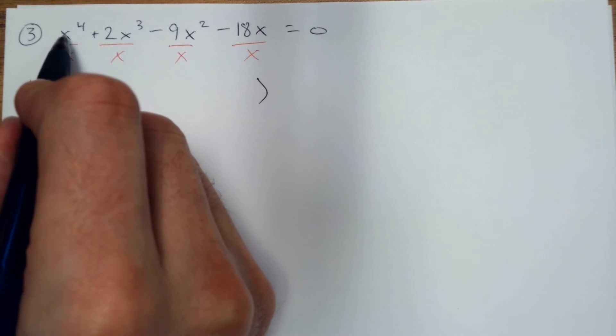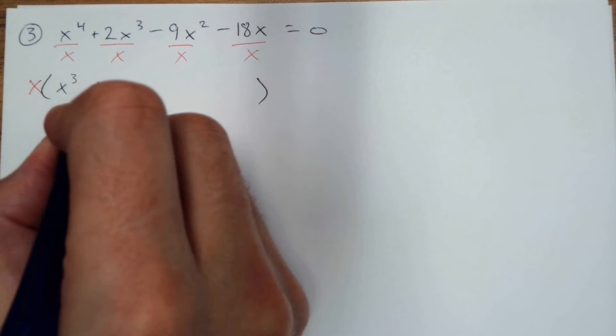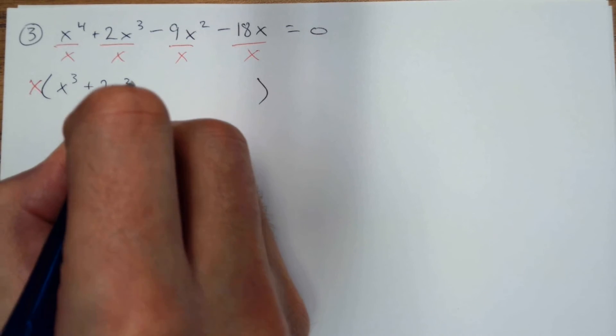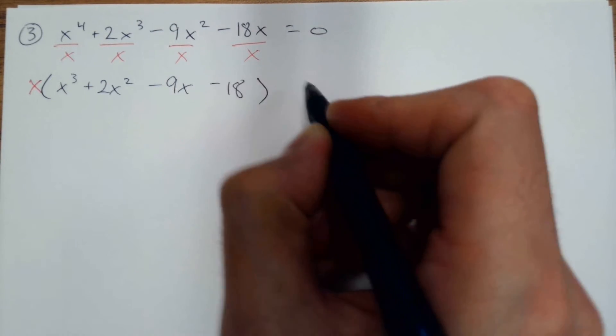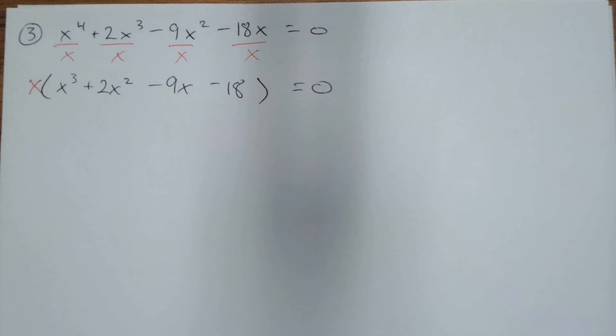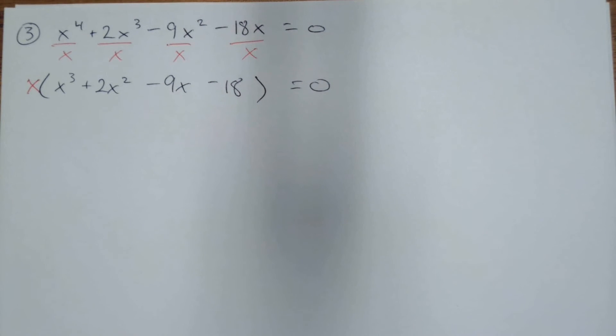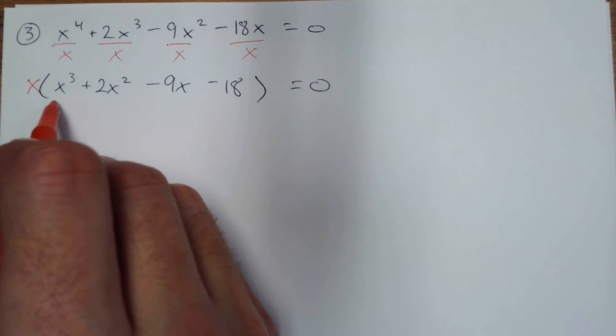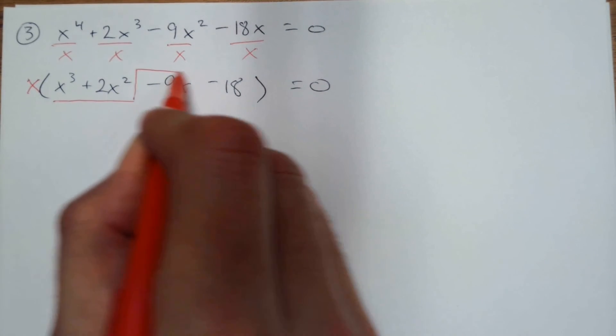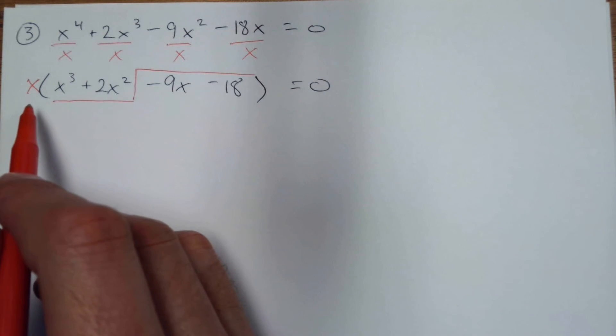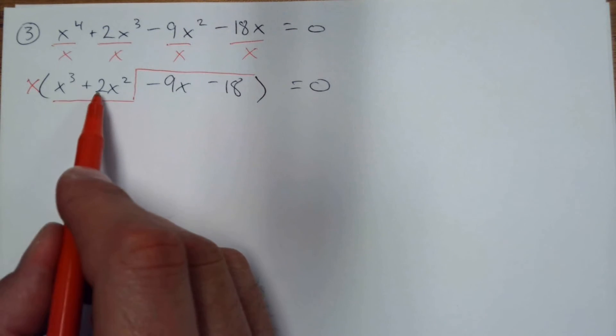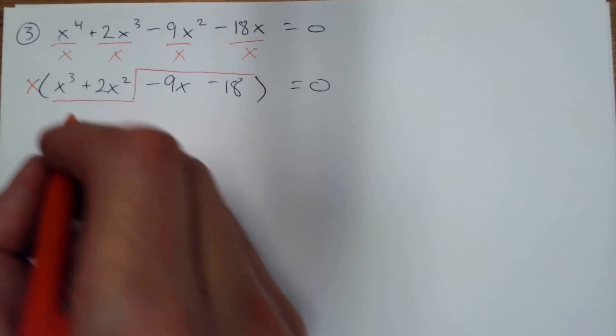So I have x to the 3rd plus 2x squared minus 9x minus 18 equals 0. And then maybe you're stuck, maybe you don't know what to do, but you can factor by grouping. So really I'm going to ignore this x and just bring it along at the very end. And I'm just going to pretend like this is a factor by grouping problem, and that's it.